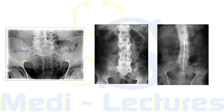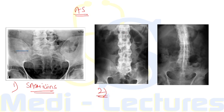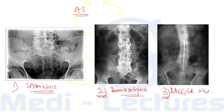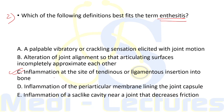X-ray images show various signs of AS. The first image shows sacroiliitis, with the blue arrow showing inflammation of the sacroiliac joint. The second image shows marginal syndesmophytes giving a bamboo spine appearance — the whole spine looks like a bamboo stem. The third image shows a single dense central line in the spine known as the dagger sign. The correct answer to question two is option C: inflammation at the site of tendinous or ligamentous insertion into the bone.